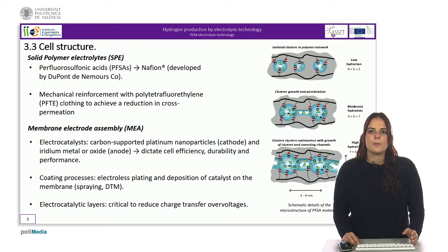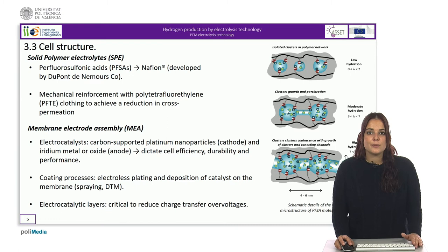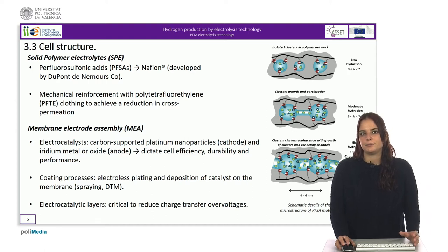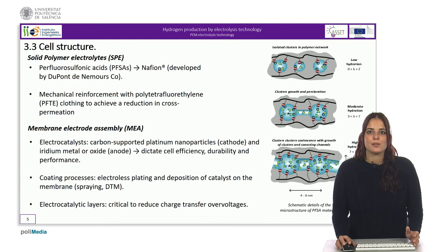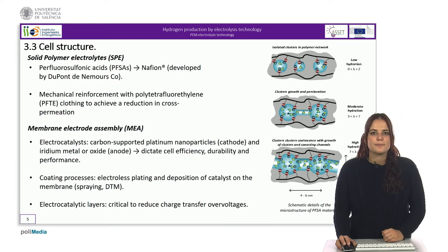Regarding the different parts of the membrane electrode assemblies, carbon-supported platinum nanoparticles are used as the electrocatalyst at the cathode for the promotion of the hydrogen evolution reaction. On the anodic side, iridium is the most efficient and stable catalyst for the oxygen evolution reaction in acidic media. Electrocatalyst particles are deposited on both sides of the perfluorosulfonic acid membrane to form micrometer-thick catalytic layers. The composition and microstructure of these catalytic layers are of critical significance since they dictate overall cell efficiency and, to a large extent, durability and performance. What matters most here is surface adherence and maximum activity.